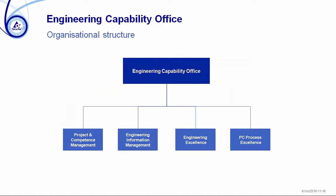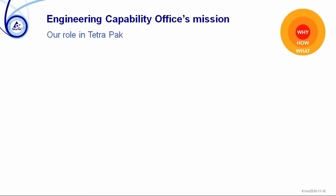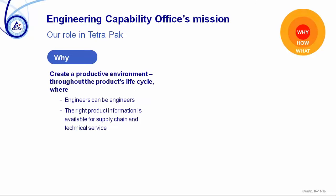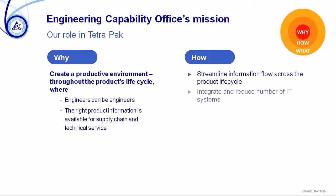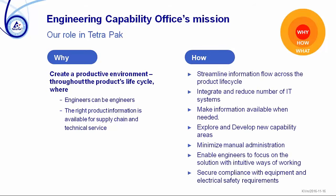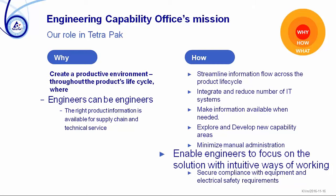We have a central organization called the Engineering Capability Office — ECO. It's a central organization with four major areas: project and competence management, engineering information management, engineering excellence, and product creation process excellence. The Engineering Capability Office's mission is to create a productive environment throughout the product lifecycle where engineers can be engineers and the right product information is available when needed. Our aim is to provide methods, tools, processes, and knowledge to make sure that engineers actually can focus on what they should do.